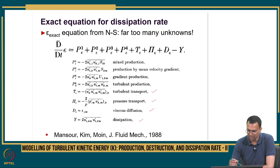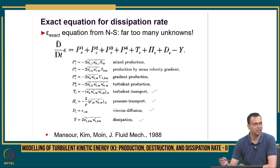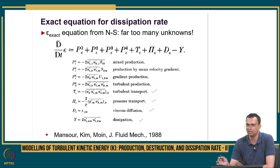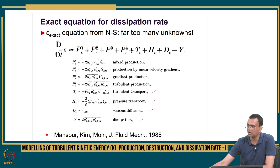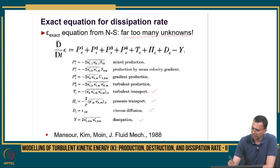There are 4 production rates, and these are extremely complicated terms — it has far too many unknowns. Only if you have patience can you do a direct numerical simulation and look into the budget of this to understand the physics. But to model this is actually complicated. So we do not go and model the exact equation.